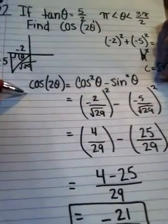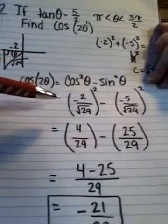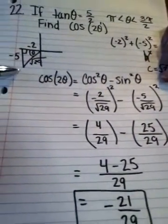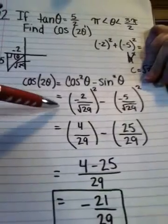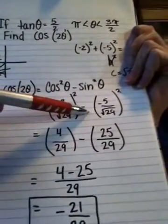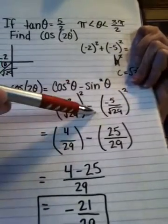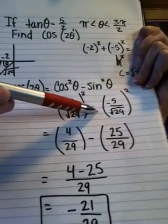So the double angle formula for cosine is cosine squared theta minus sine squared theta. Solving from our triangle, we find that our cosine is negative 2 over square root of 29, and our sine is negative 5 over square root of 29.